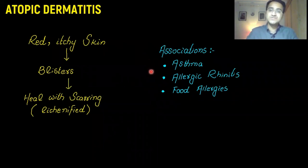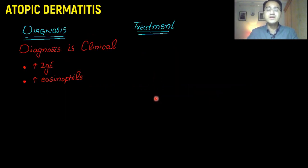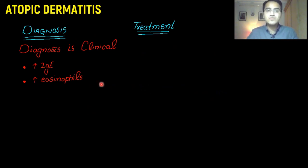Atopic dermatitis is associated with other autoimmune diseases like asthma, allergic rhinitis, and food allergies. Diagnosis is mainly clinical, based on clinical symptoms, but you can also find elevated IgE and eosinophils, which are indicative of an allergic reaction.